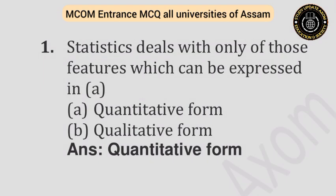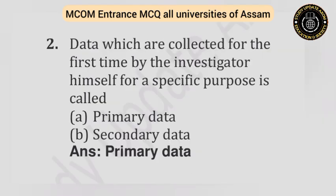Question number one: Statistics deals with only those features which can be expressed in — Option A: Quantitative form. Option B: Qualitative form. Answer is quantitative form. Question number two: Data which are collected for the first time by the investigator himself for a specific purpose is called — Option A: Primary data. Option B: Secondary data. Answer is primary data.